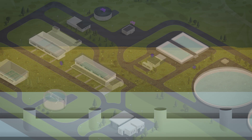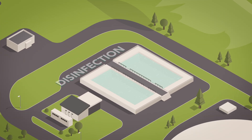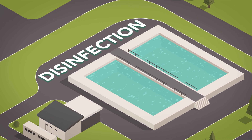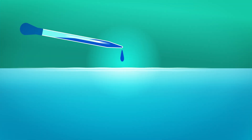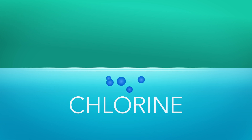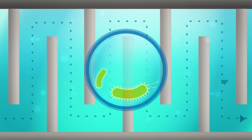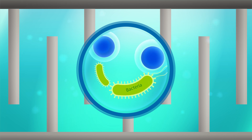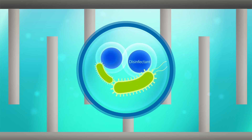Now that all the sediment has been removed, the water moves to the disinfection process. In this tank, we add disinfectants such as chlorine to the water. The clean water flows through a series of baffles to mix thoroughly with the disinfectants. The disinfectants attack any bacteria that may be in the water and destroy it.